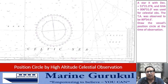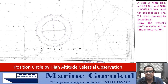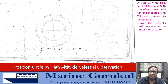Star X, with a declination of 51° 21' North and GHA of 006° 31', was used for a celestial observation. The true altitude was observed to be 89° 54.6'. Draw the vessel's position circle or position line at the time of this observation. Obviously, as it is a case of high altitude, we cannot get a celestial PL — it has to be a position circle.